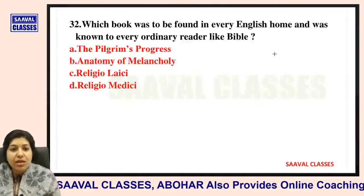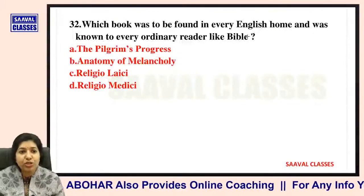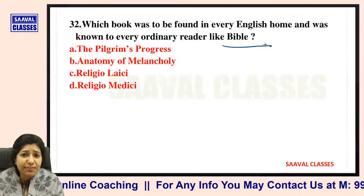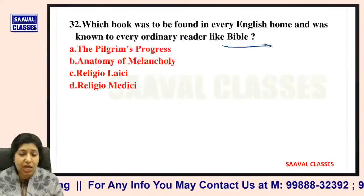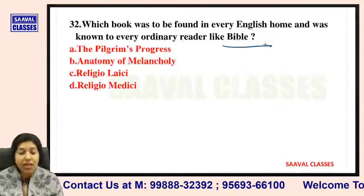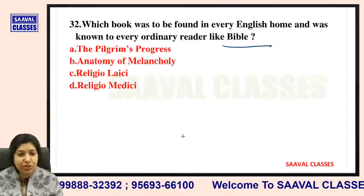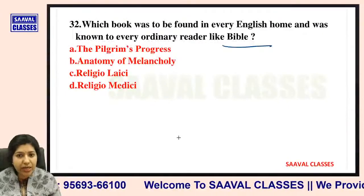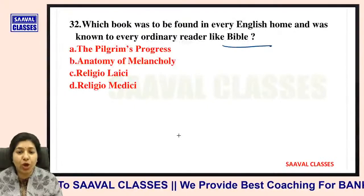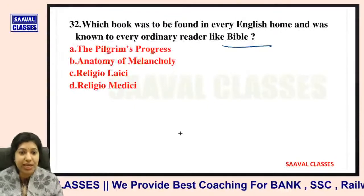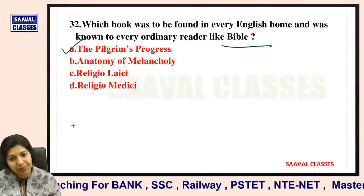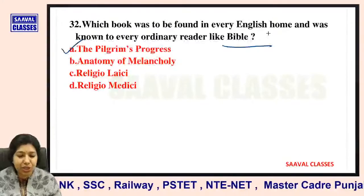Question number thirty-two: Which book was to be found in every English home and was known to every ordinary reader like the Bible? The Pilgrim's Progress, Anatomy of Melancholy, Religio Laici, or Religio Medici? The answer is The Pilgrim's Progress — this was the book found in every English home, like the Bible.